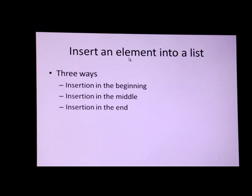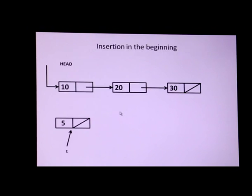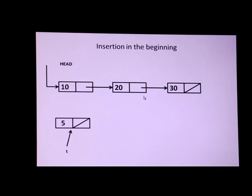Now, insertion into a list can happen in either of these three ways: either in the beginning, in the middle, or in the end. Let us see how to insert a node in the beginning of the list. This is my sample linked list which contains three elements: 10, 20, and 30.